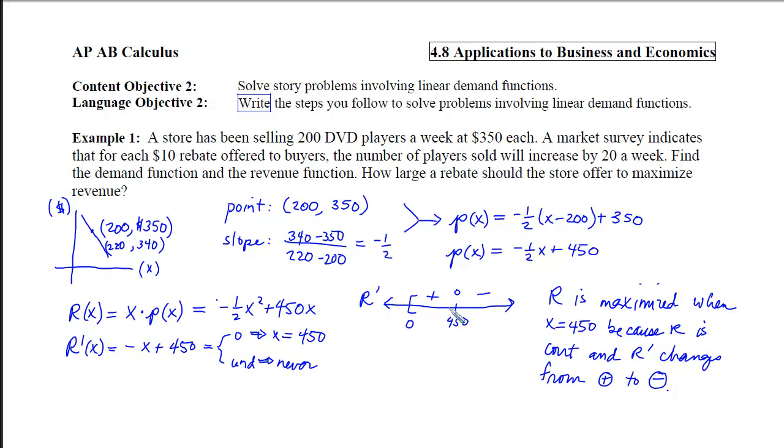And the reason we know that is because R is continuous and R prime changes from positive to negative. Now, we have found the number of DVD players we should sell, but we haven't answered the question yet. The question is, how large a rebate should the store offer? So we can't compute the rebate until we know the price that's being charged. So I'm going to take this 450 and plug it into the price function, and I will get a negative 225 plus 450. So the price I've charged for 450 DVD players will be a negative 225 plus 450, which is $225. The question is, how much of a rebate did I offer? Well, we originally charged 350 each, and now we're going to charge 225. So the rebate is 350 minus that 225, which ends up being $125.